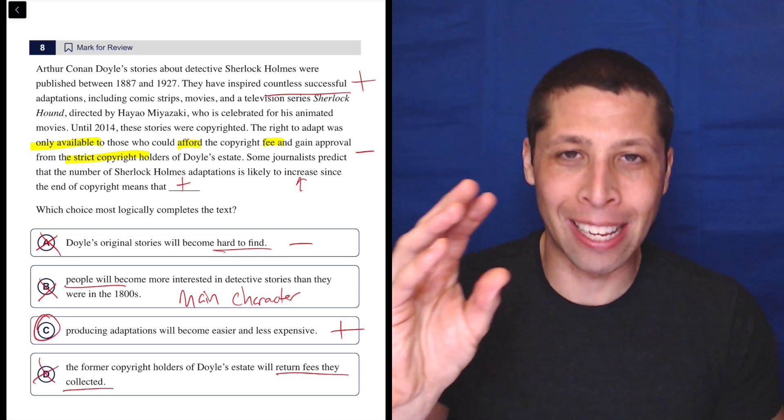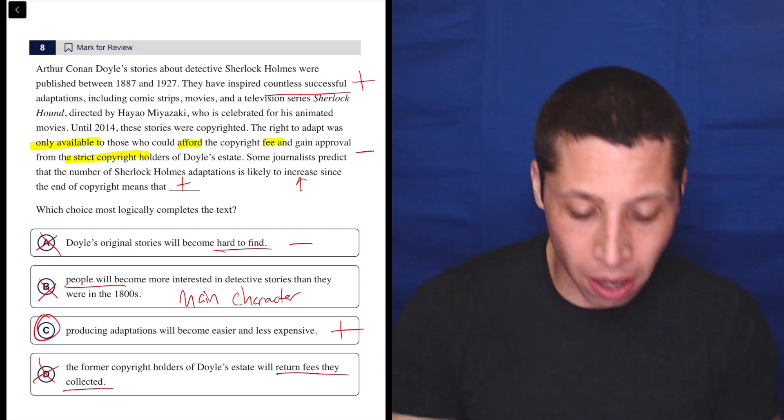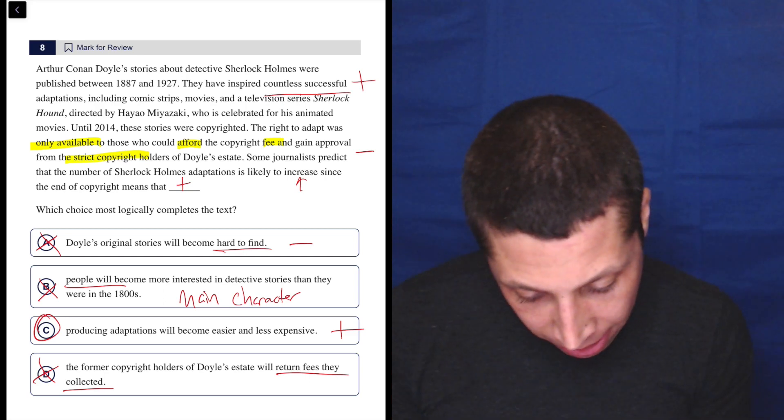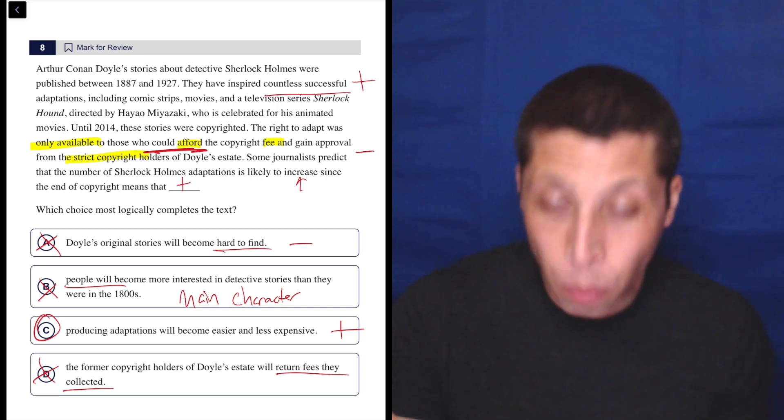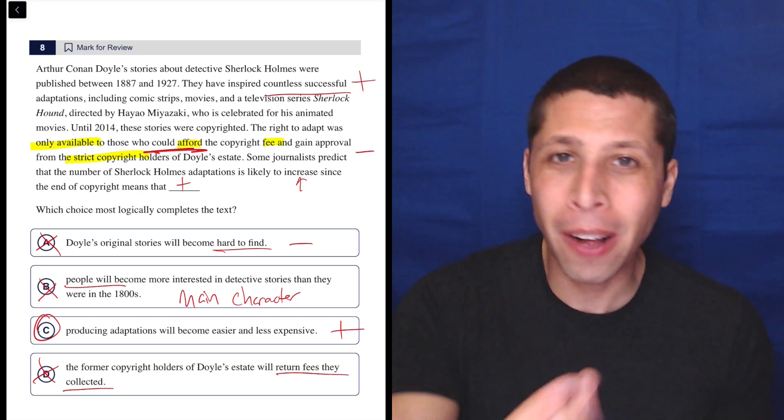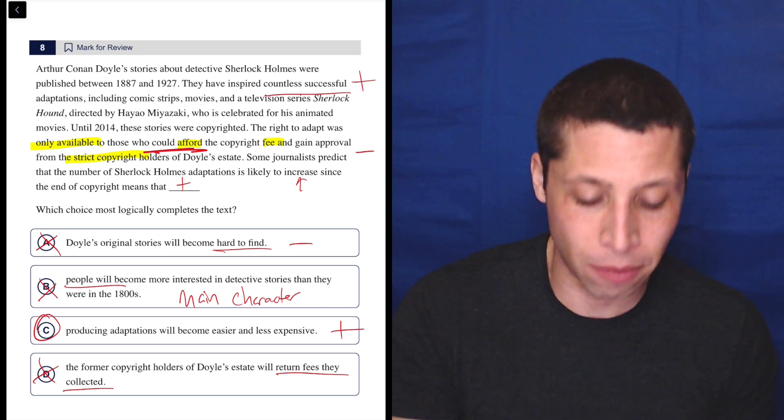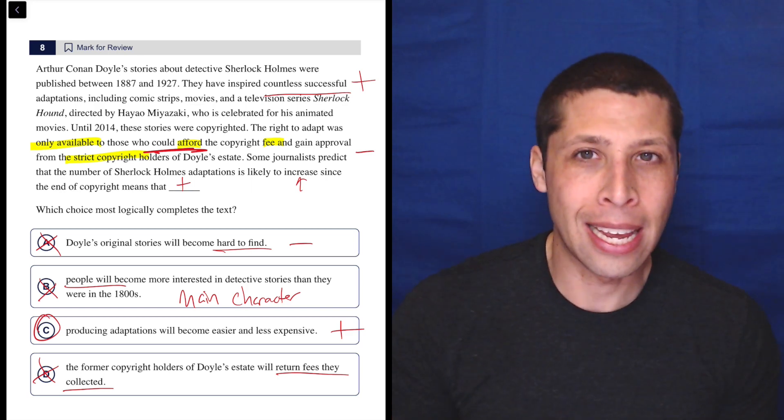So look, C is much easier. Why are there going to be more adaptations? Because the copyright that made these things hard to afford will be gone. So once the copyright is gone, they're cheaper. Follow the trail here. This is a good example of how these inference questions are supposed to work—we can almost